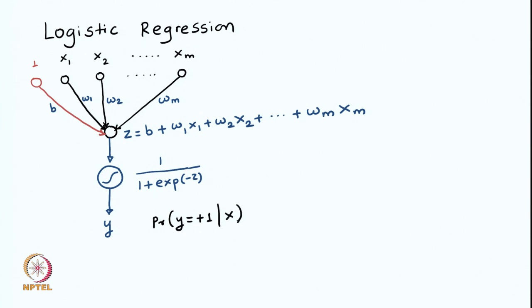Let us understand this more clearly. What we pass here is the features of a single example — let us say the i-th example, denoted x superscript i. We pass the features of the i-th example through this network, and if we know all the weights, we get a linear combination followed by a sigmoid activation that gives us a number between 0 and 1, interpreted as the probability of the positive class. We are representing logistic regression here in the style of a neural network.